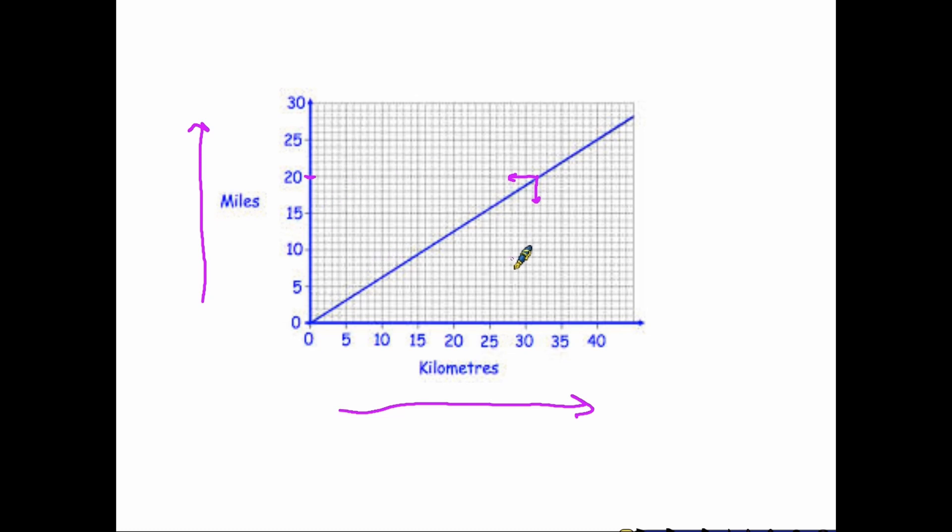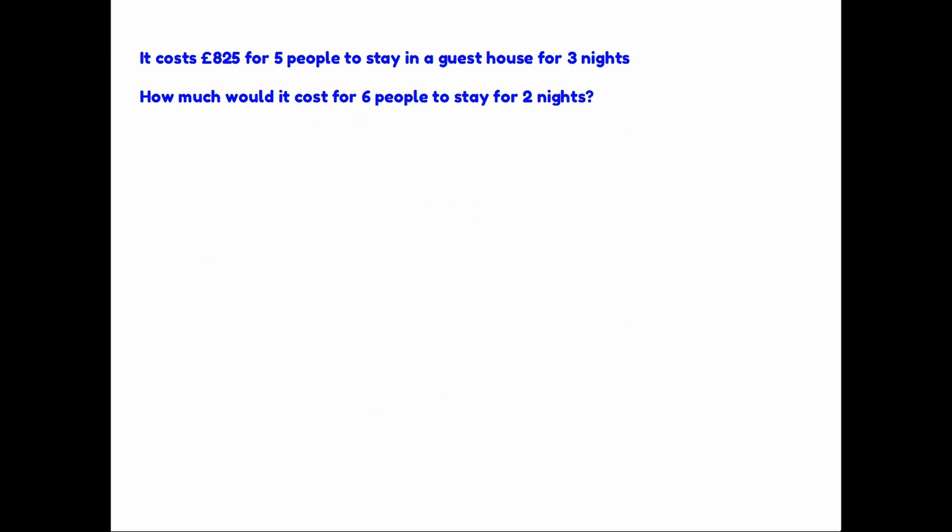So dealing with a conversion graph is direct proportion. I'm going to finish the direct proportion section by looking at one of the more difficult questions I've seen in the foundation curriculum. It says that it costs £825 for five people to stay in a guesthouse for three nights. And then it's asking how much would it cost for six people to stay for two nights. Initially, you can't see the relationship between these because we have an amount, the number of people, and the number of nights.